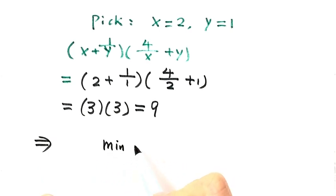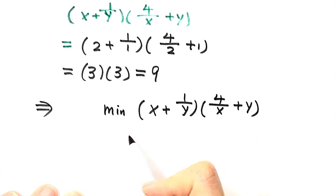The minimum value of the expression x plus 1 over y times 4 over x plus y equals 9. So 9 is the minimum value of this expression.